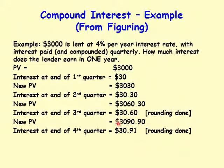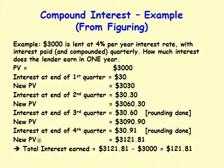For the fourth quarter, the interest is one percent of three thousand ninety dollars and ninety cents, which is thirty dollars and ninety-one cents — rounding up from nine-tenths of a cent to one cent. Adding this to the principal, the new final principal value is three thousand one hundred twenty-one dollars and eighty-one cents. Some folks might call this the final value, or FV.